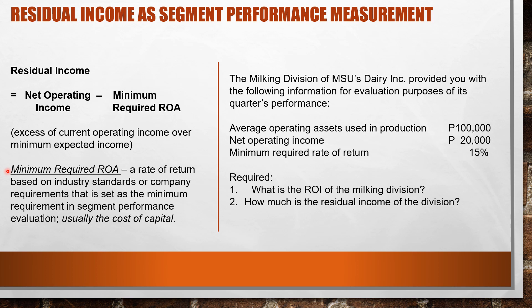The minimum required ROA is a rate of return based on industry standards or company requirements that is set as the minimum requirement in segment performance evaluation. This is usually the cost of capital or the weighted average cost of capital of a company. For the sample problem, the Milking Division of MSU's Dairy Incorporated provides the following information: average operating assets used in production of $100,000, net operating income of $20,000, and a minimum required rate of return of 15%.